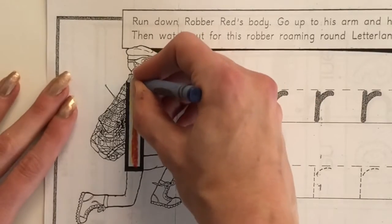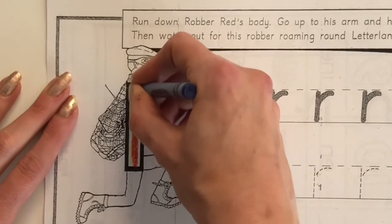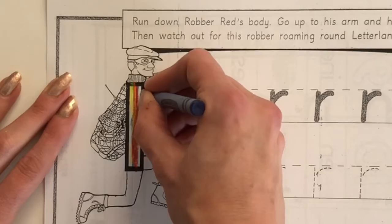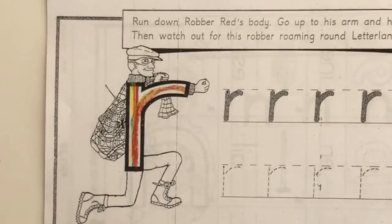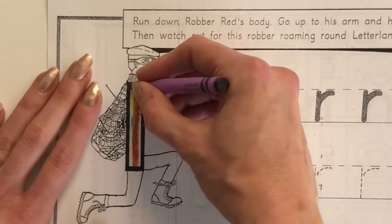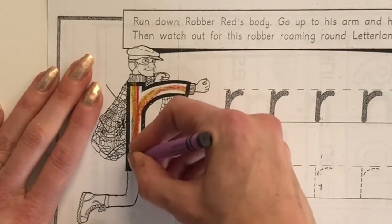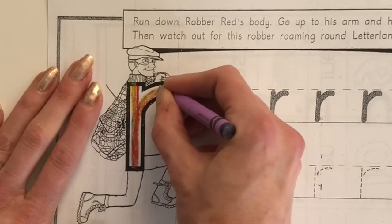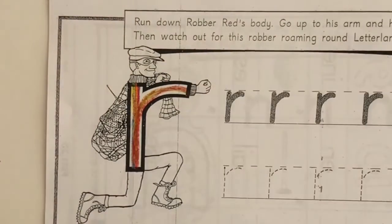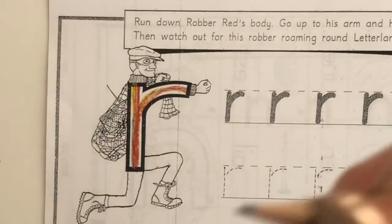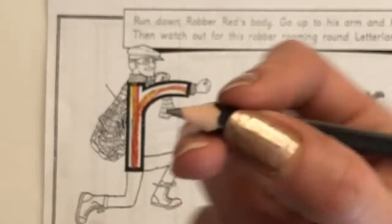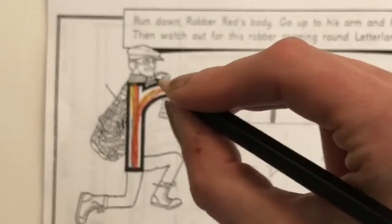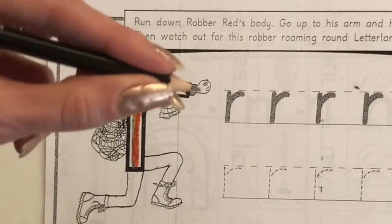Blue. Start at his neck. Run down his body, go up to his arm and his hand and lift it off. We are done rainbow writing. We are ready to trace it with pencil. Pick up your pencil and get your three finger triangle grip on just like this.